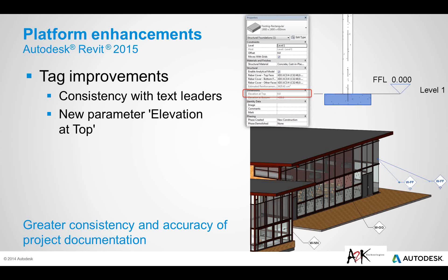The leader line was a little bit random in the past — when you placed a tag and then moved it around, it wouldn't really play ball. Also, the new parameter 'elevation at top' has been added to isolated foundations, all foundations, and foundation slabs. It specifies the elevation of the highest point or plane of the foundation, which you can use in tags when documenting a project.